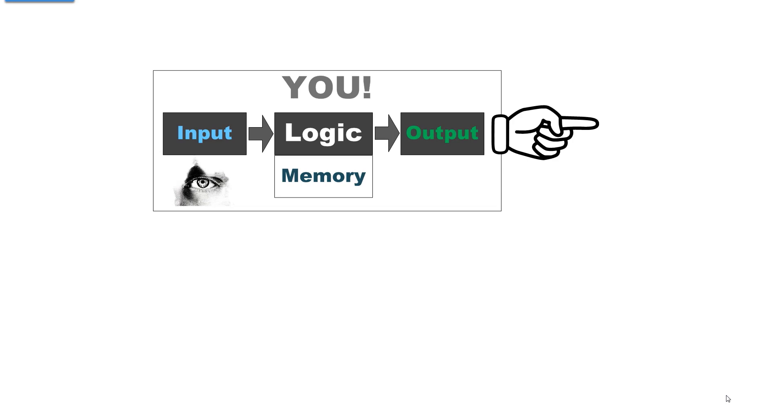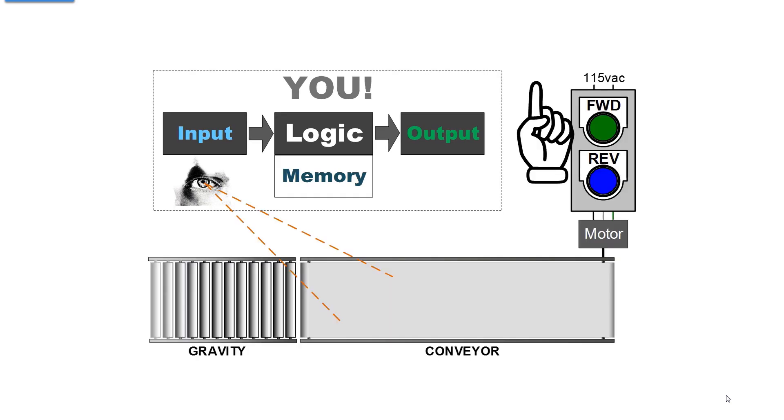Essentially, you clone your observations and reactions into the programmable logic controller. Here's an example: You have the responsibility to run a conveyor with a sole purpose of moving a carton to an exact spot on the conveyor and then leave it there.